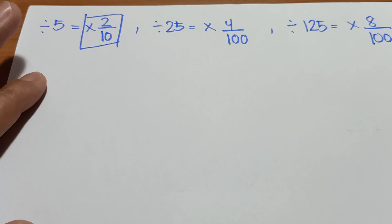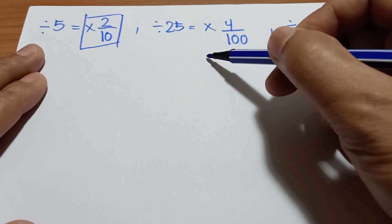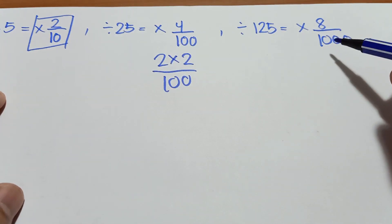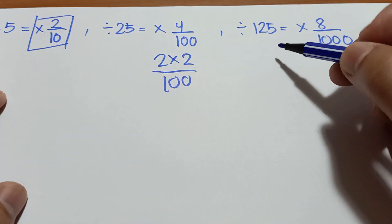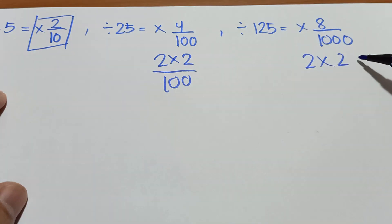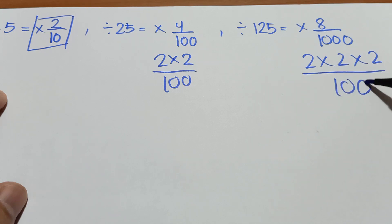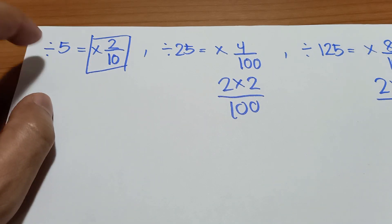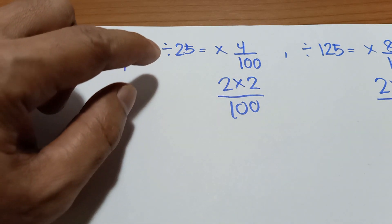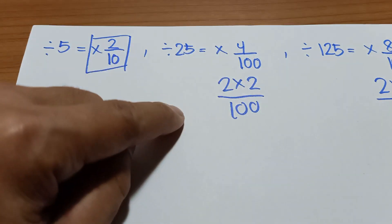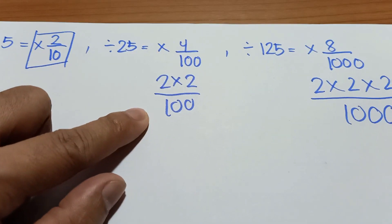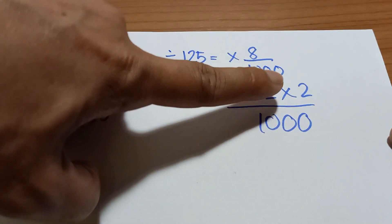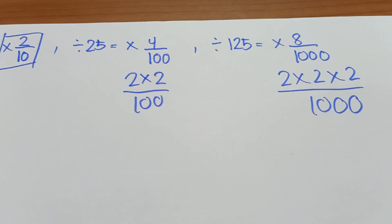If we divide the number by 5, times 2 over 10. You can also write 4 as 2 times 2 over 100. And the last one, when you divide the number by 125, this is the same as 2 times 2 times 2 over 1,000. So: divide by 5 → times 2 over 10; divide by 25 → times 4 or 2 times 2 over 100; divide by 125 → times 8 or 2 times 2 times 2 over 1,000.